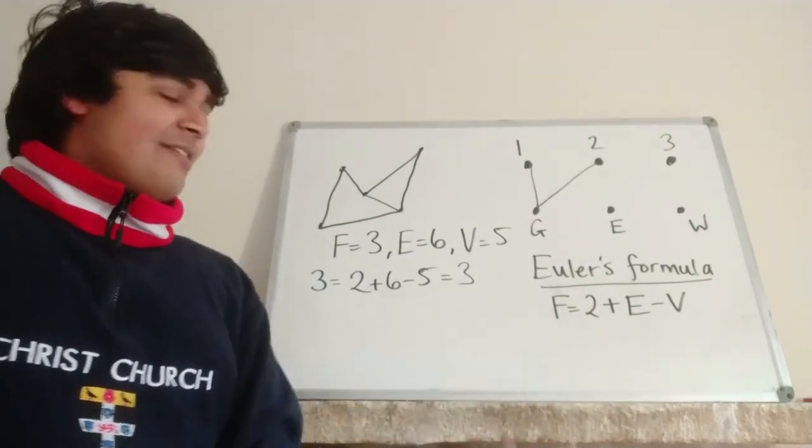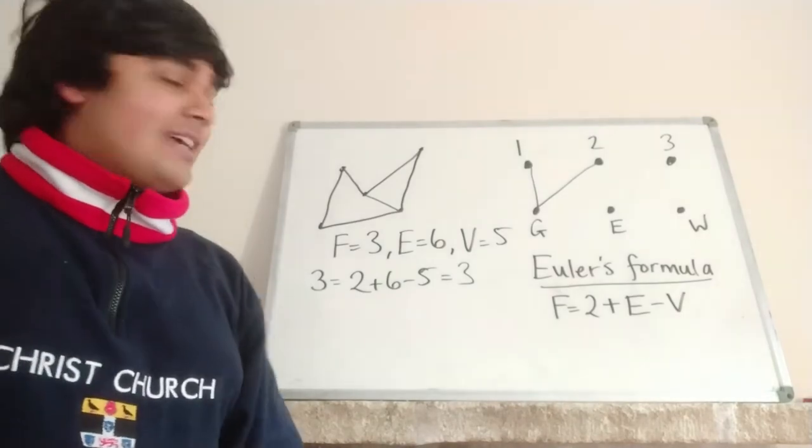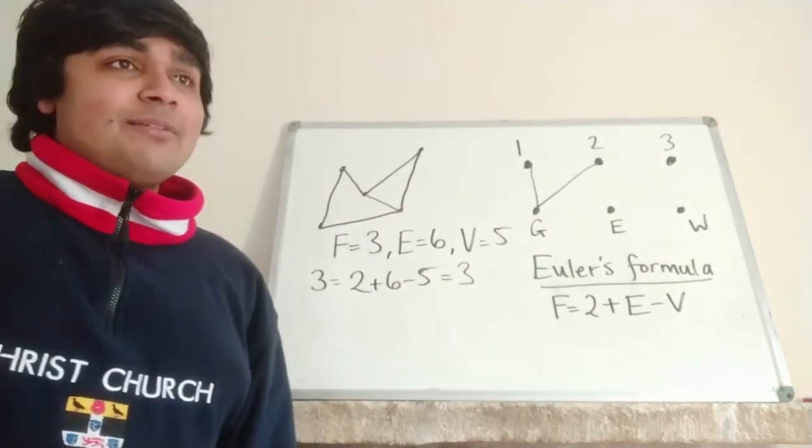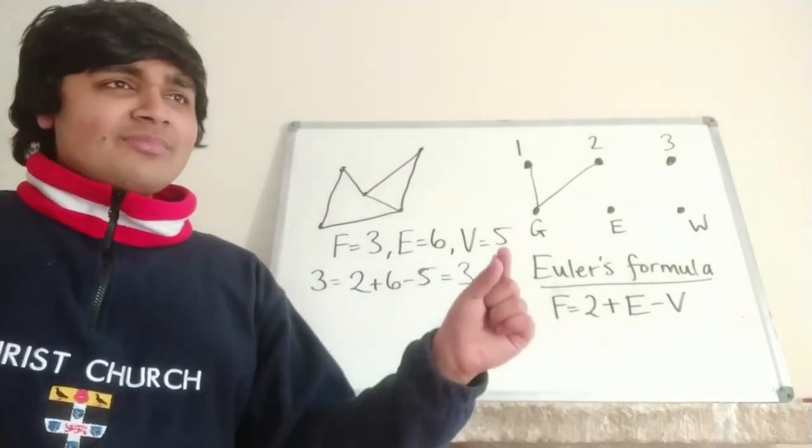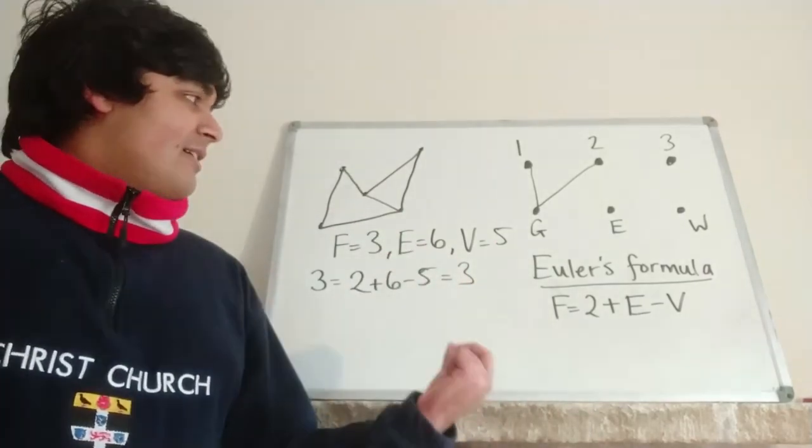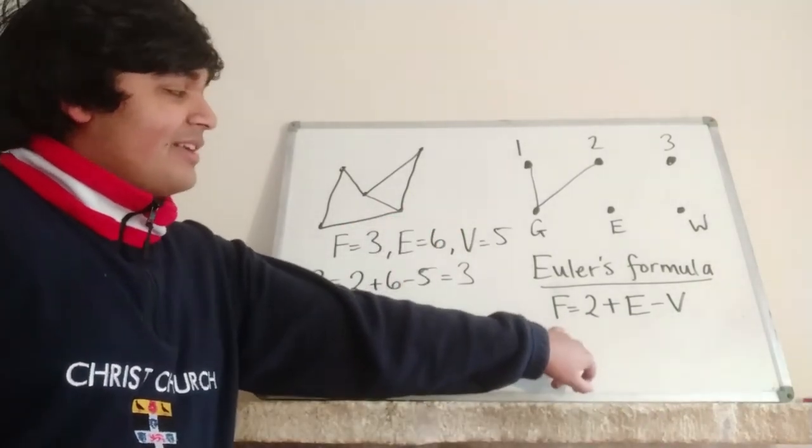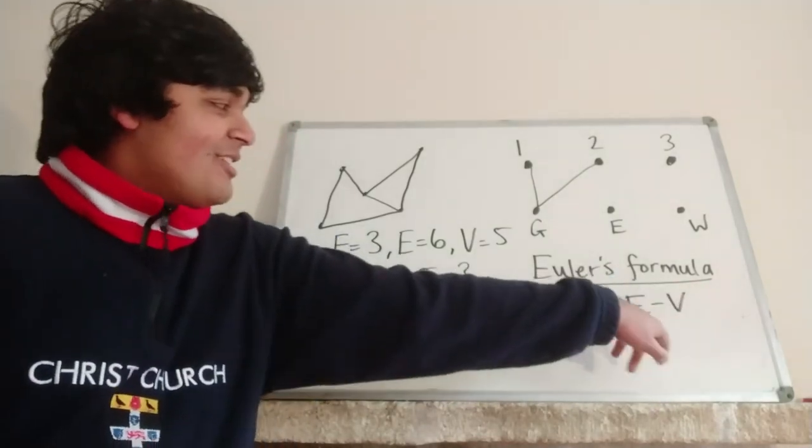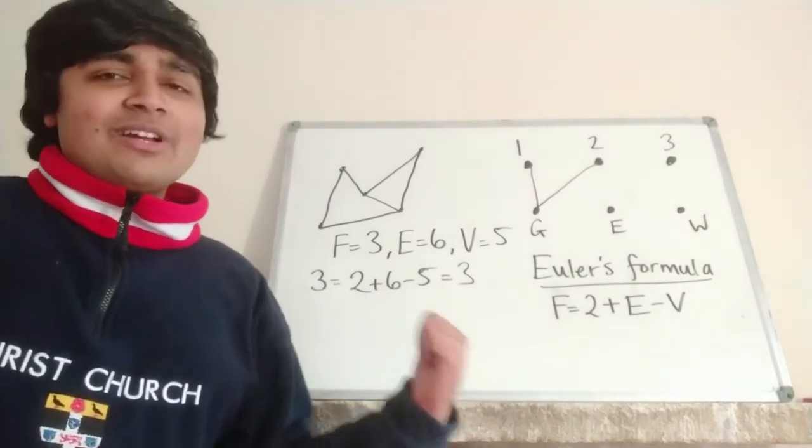So if you start off with the case where f is one, so you have just one face, i.e. this unbounded face on the outside, this unbounded region on the outside, then that's what's known as just a tree. And a property of trees is that a tree has exactly one more vertex than it has edges. And then this thing on the left hand side, you have one. On the right hand side, you have two plus something minus one bigger than that something, so you've got two minus one, which is one, which is equal to the number of faces. So that works in the base case.